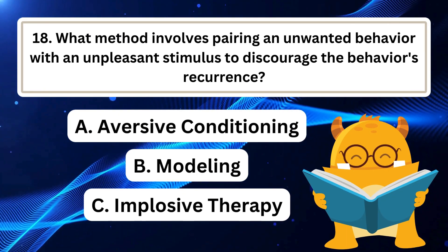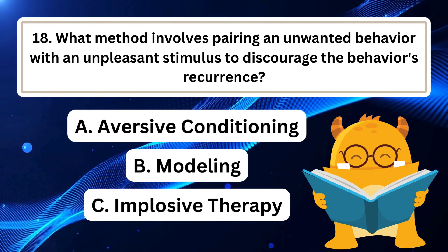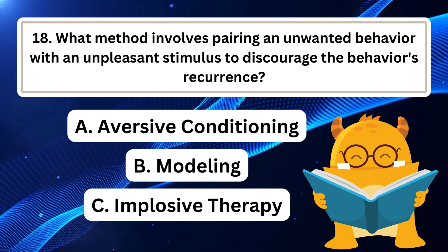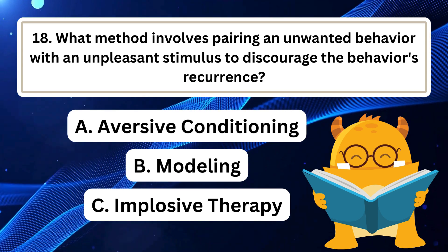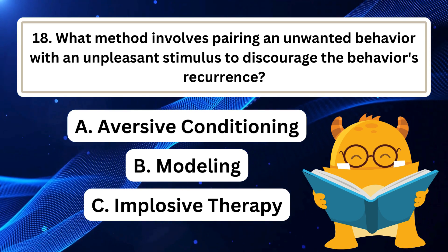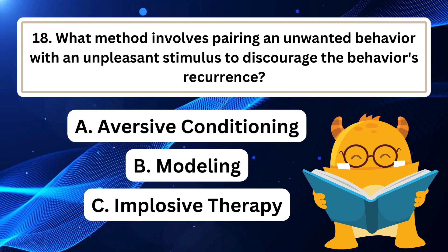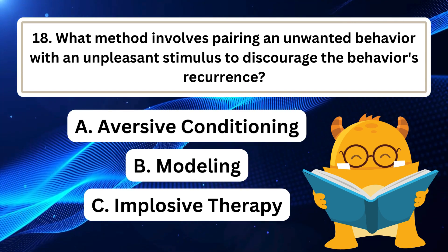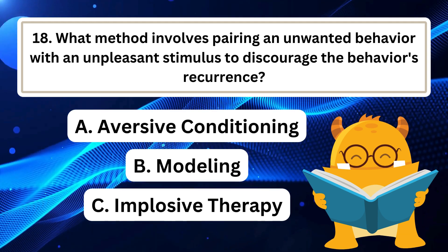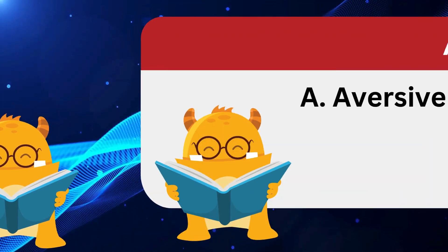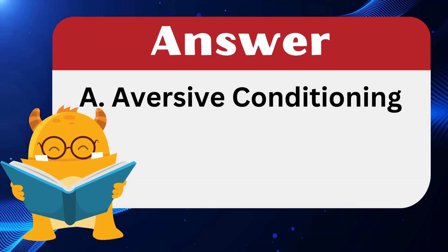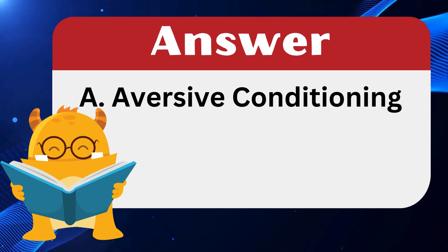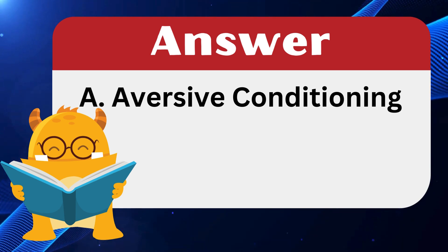Question 18: What method involves pairing an unwanted behavior with an unpleasant stimulus to discourage the behavior's recurrence? The answer is A: Aversive conditioning. Aversive conditioning pairs an unwanted behavior with an unpleasant stimulus to reduce its occurrence.